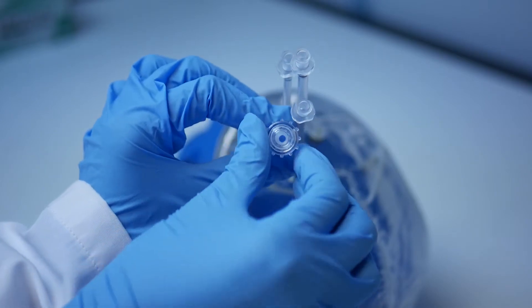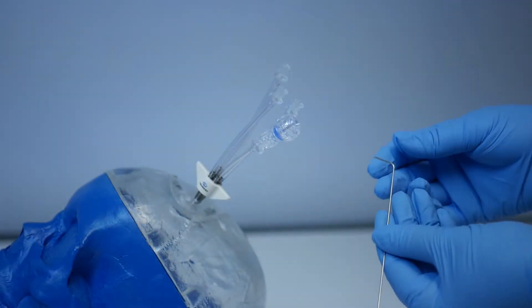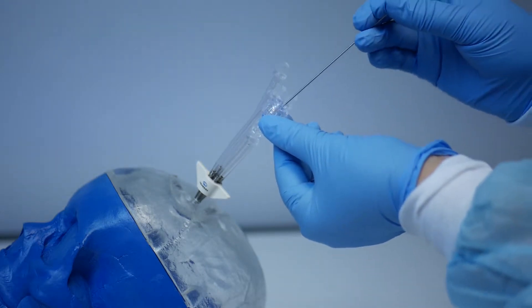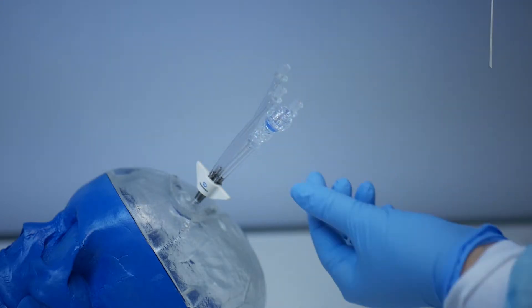Open the compression fitting on the short pigtail. Take the durapiercer that you set aside earlier and insert it through the compression fitting on the short pigtail of the quadlumen bolt. Remove the durapiercer after piercing the dura.